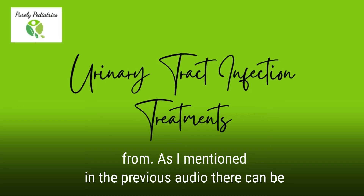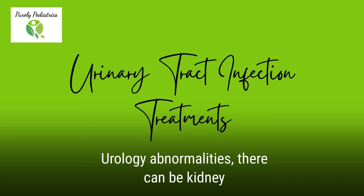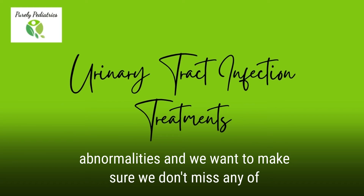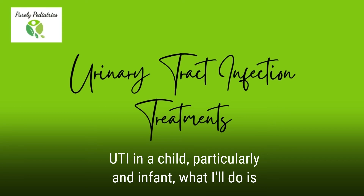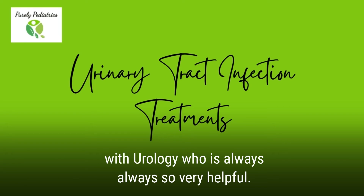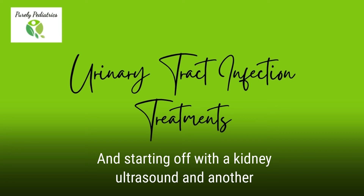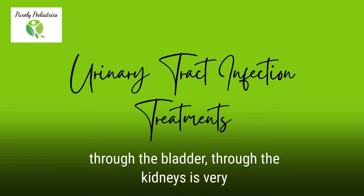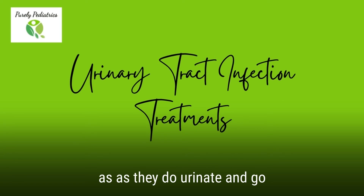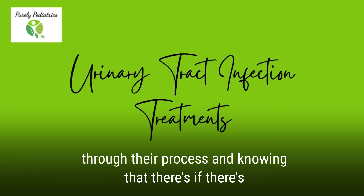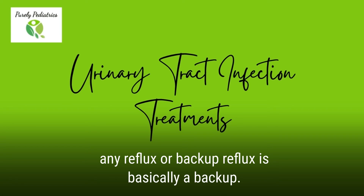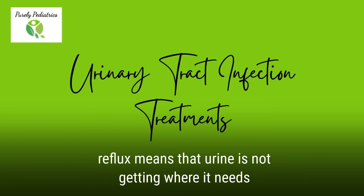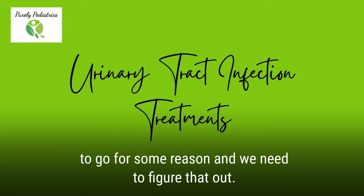As I mentioned in the previous audio, there can be urologic abnormalities and kidney abnormalities, and we want to make sure we don't miss any of those. After a second UTI in a child — particularly an infant — I'll make sure we go through a workup with urology, starting with a kidney ultrasound and another test that can look at the movement of urine through the bladder and kidneys. This helps identify any backup of urine during urination. Reflux — meaning urinary or kidney reflux — is basically when urine is not getting where it needs to go, and we need to figure that out.